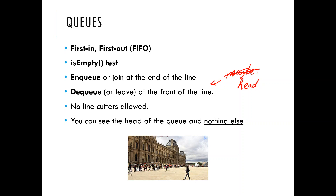Why would we want this? An array would have similar things, but you could check the middle elements. So why have this seemingly limiting data structure? We'll look at stacks, which are just as limiting, and then answer that question. Why would we want to limit what you can do with the data — only being able to add, remove, and check the head of the queue?